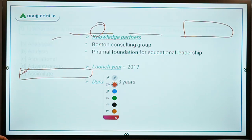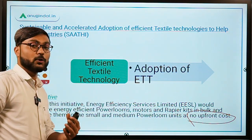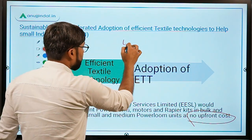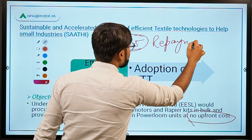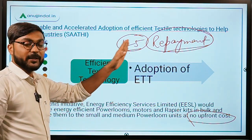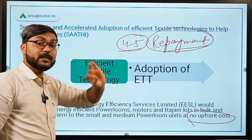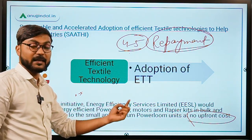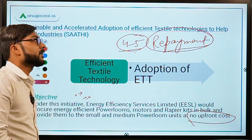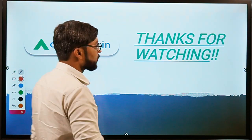Before ending the session, one additional point: the savings generated from the efficient power looms and motors will be paid to EESL over a period of four to five years. I hope all three SATHIs are clear. If you have any doubts, please ask in the comment section.